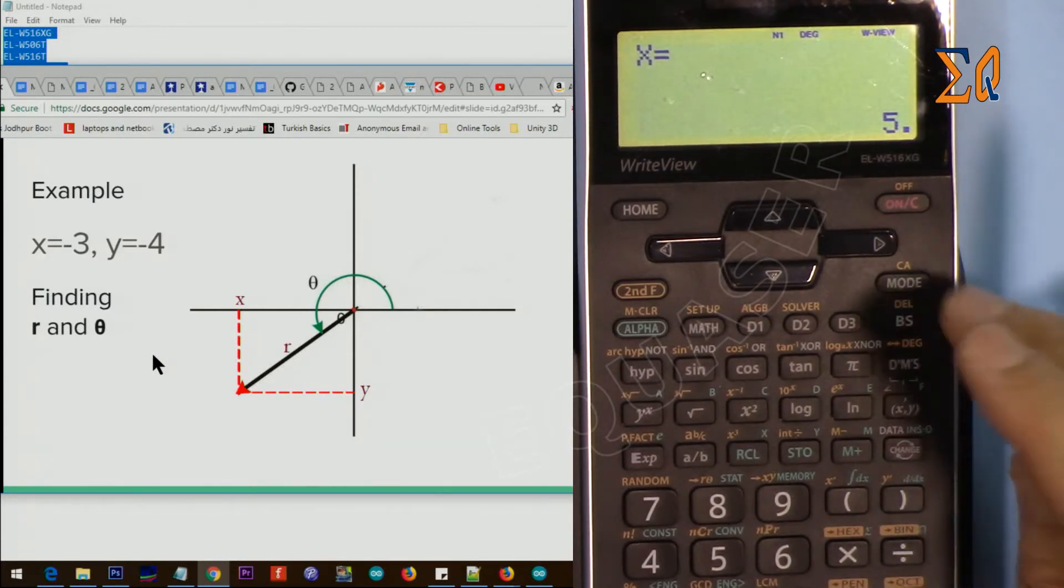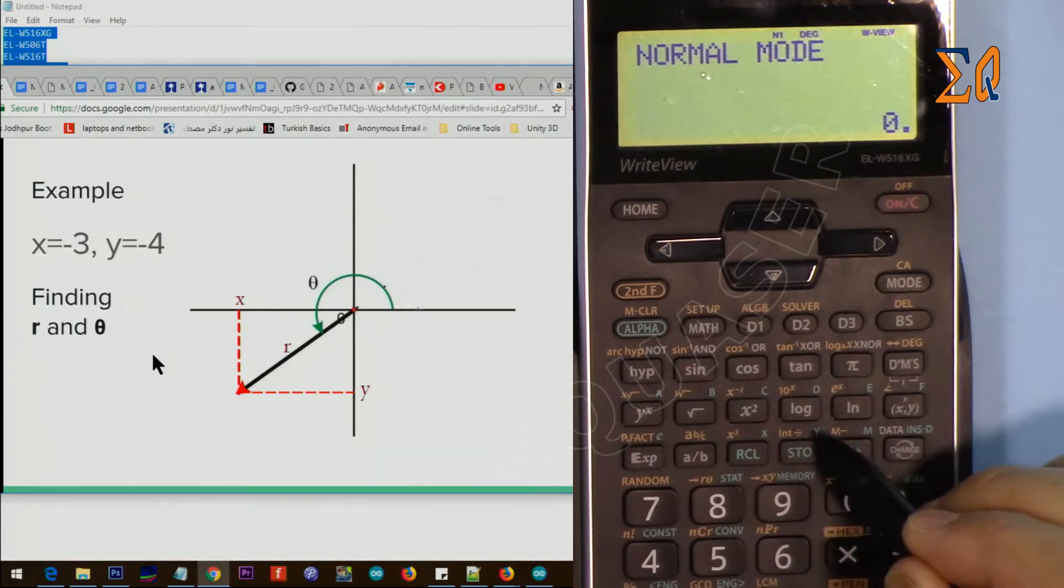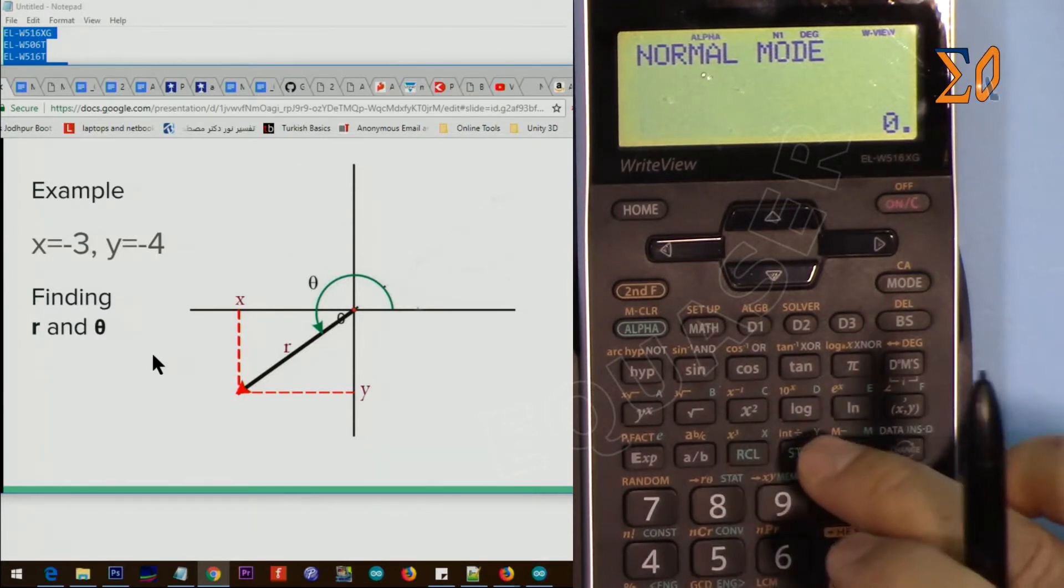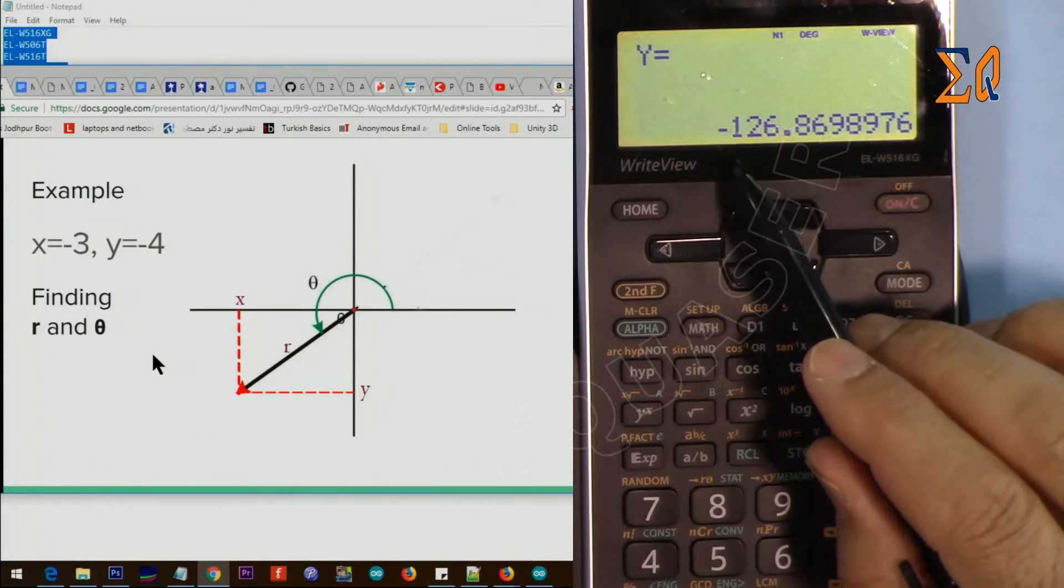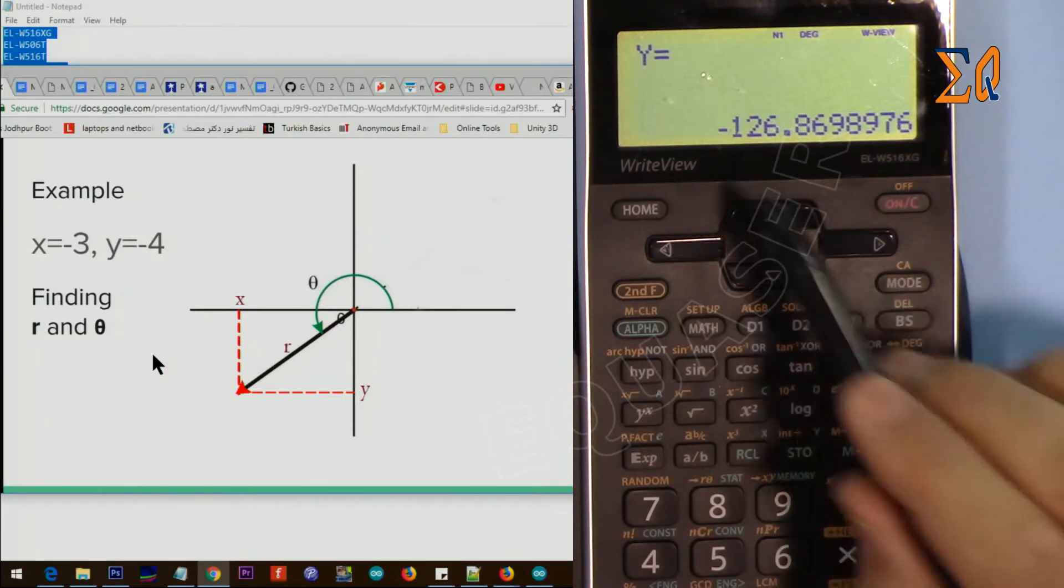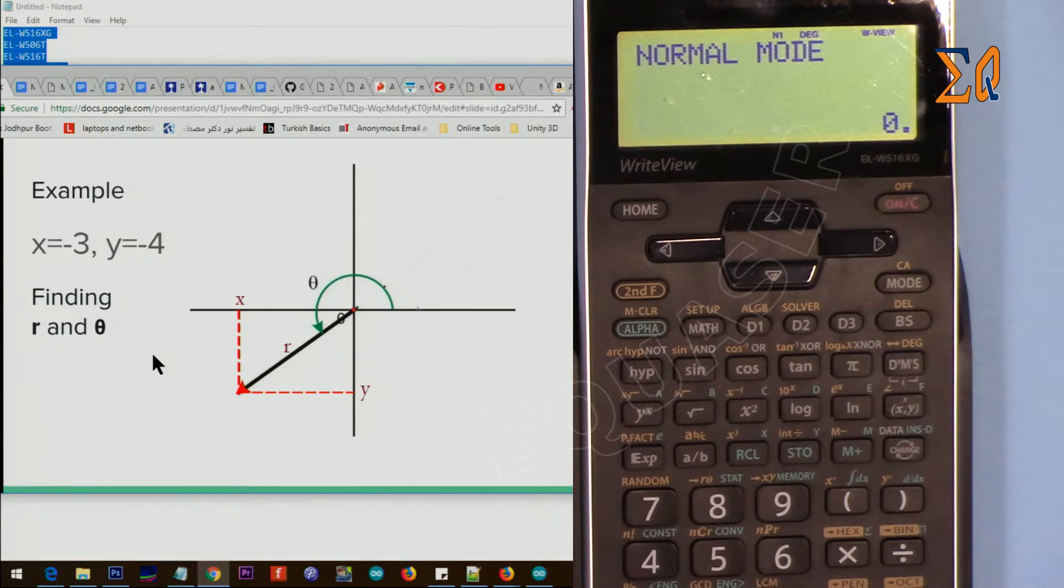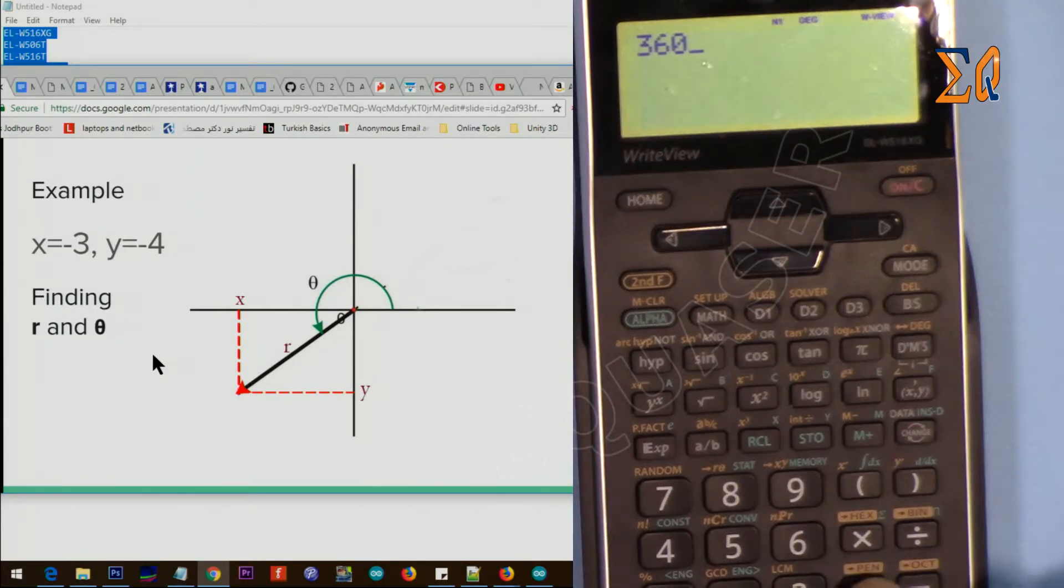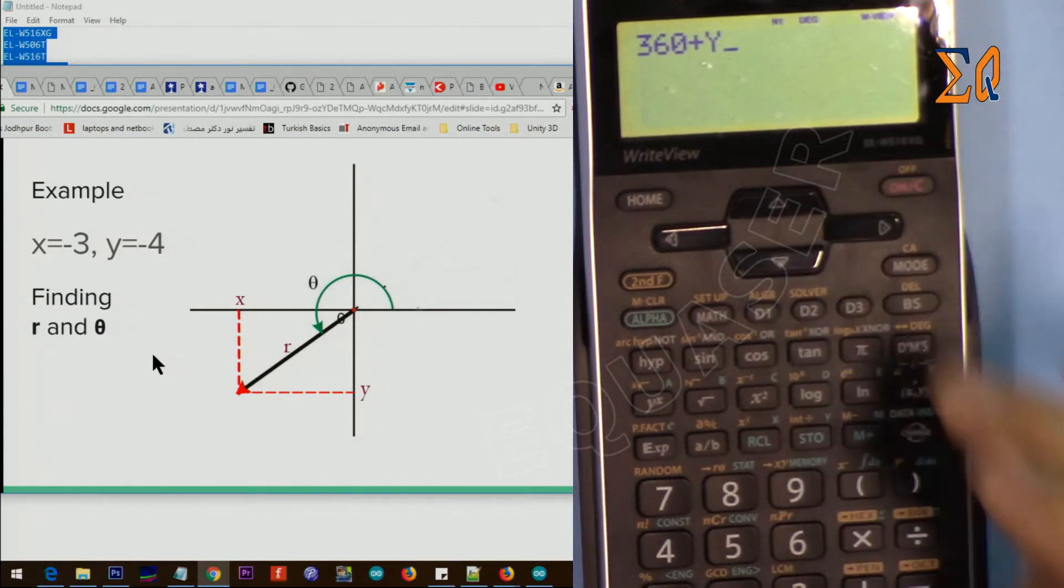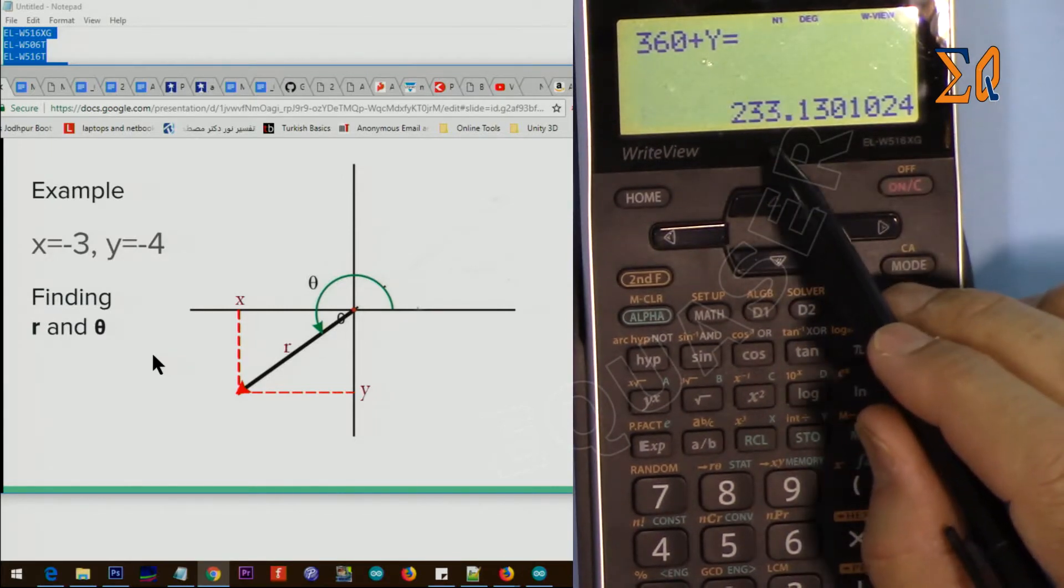And then the value of theta is stored in Y. So recall Y. So that is the value. So I have to add this to 365... Sorry, 360 plus recall Y. So now this gives us 233, and that angle is from here, 233.1 degrees.